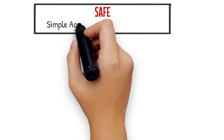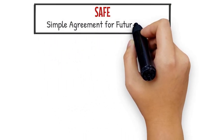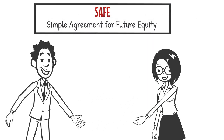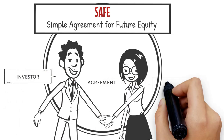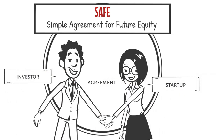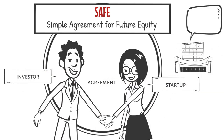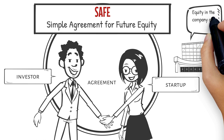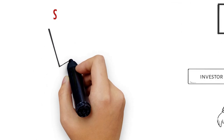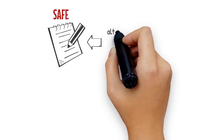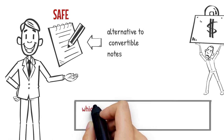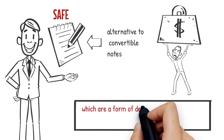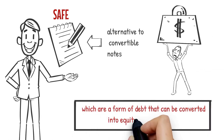SAFE, or Simple Agreement for Future Equity, is a type of agreement between an investor and a startup that provides the investor with equity in the company at a later date. SAFE is often used as an alternative to convertible notes, which are a form of debt that can be converted into equity at a later date.